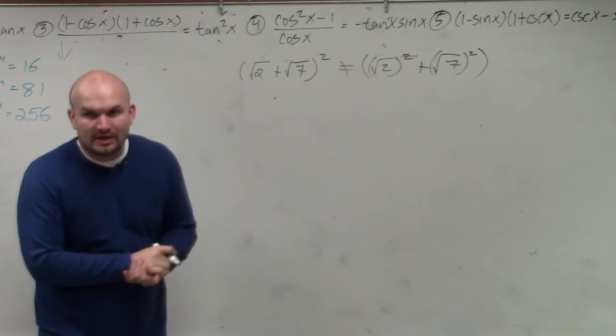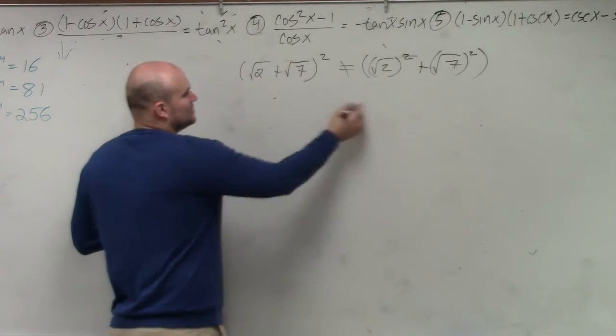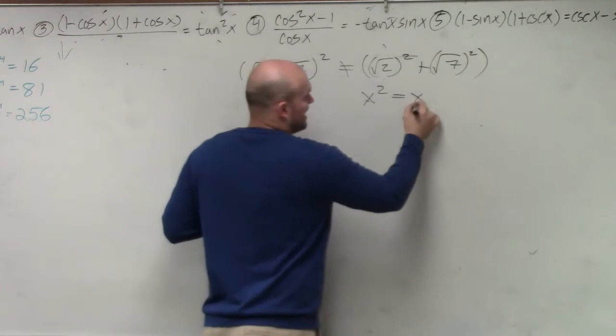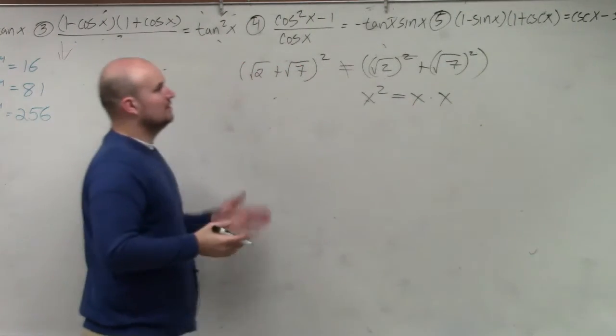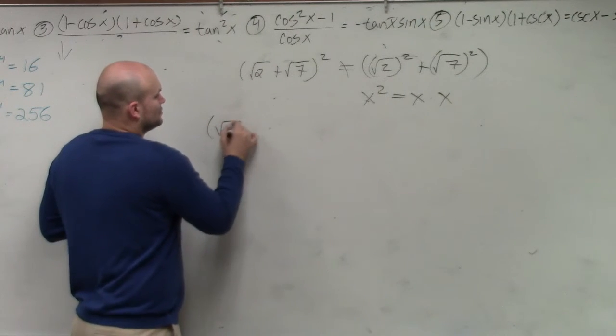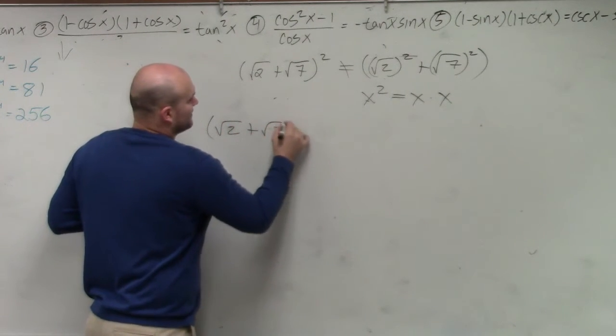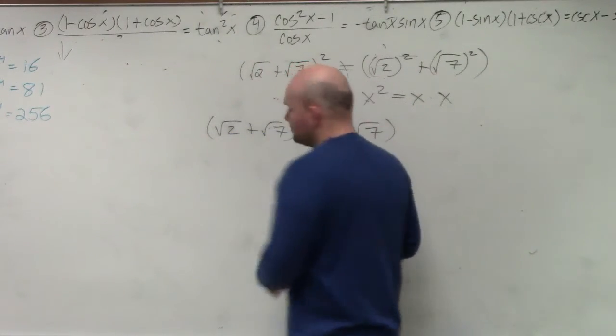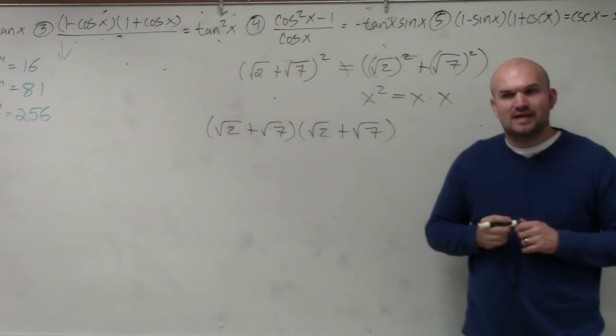We have to understand what is raising something to a power. When you square something, just like if I said x squared, what does x squared mean? That means x times x. So square root of 2 plus square root of 7 squared means square root of 2 plus square root of 7 times square root of 2 plus square root of 7. It's really that simple. It just means it's being multiplied by itself.